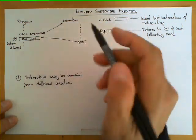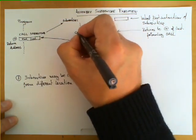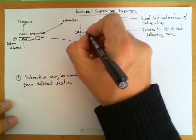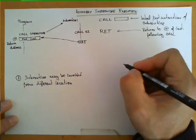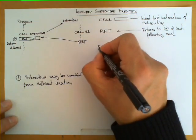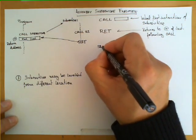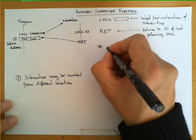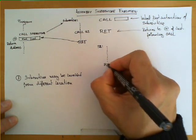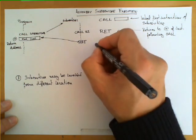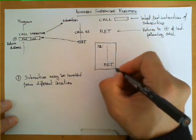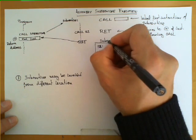For example, suppose that within a subroutine, in the middle of it, we call another subroutine — let's call it S2. This other subroutine could be written with a label S2 corresponding to its first instruction, followed by a bunch of instructions and then a RET instruction. So this would be a second subroutine.